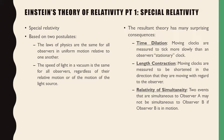Then there's relativity of simultaneity. For instance, two events that are simultaneous to observer A may not be simultaneous to observer B if observer B is in motion. So it's a different effect for the individual overall.